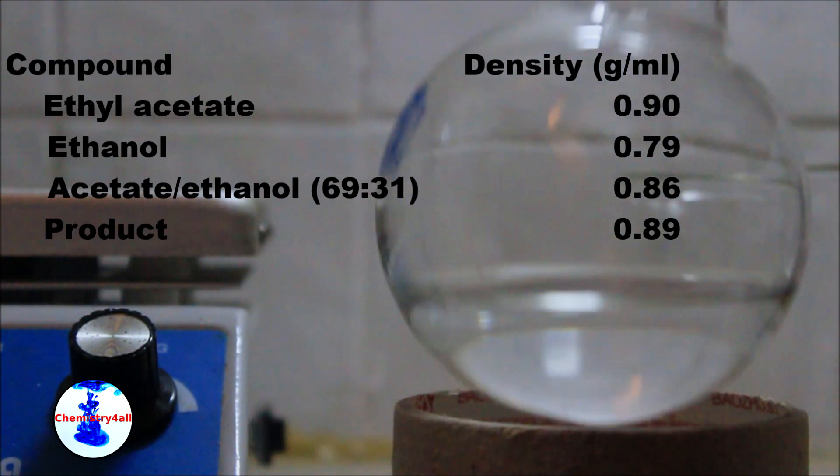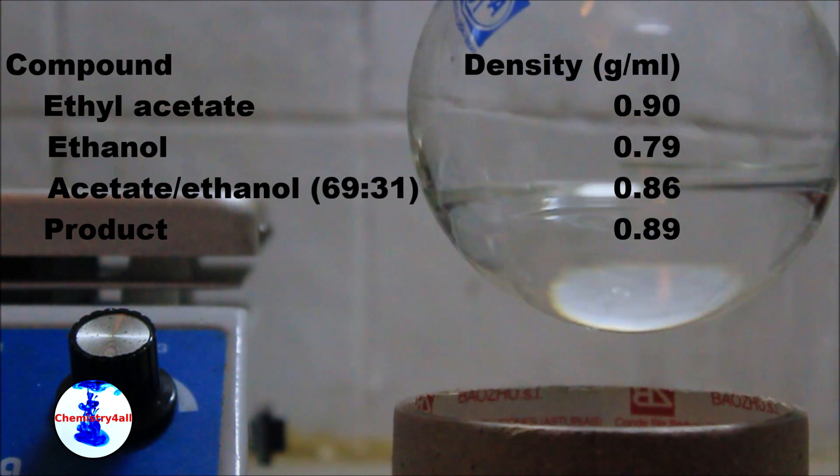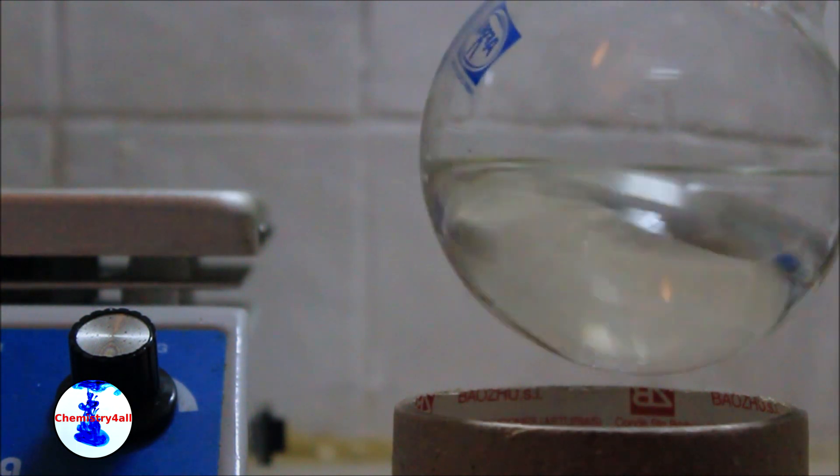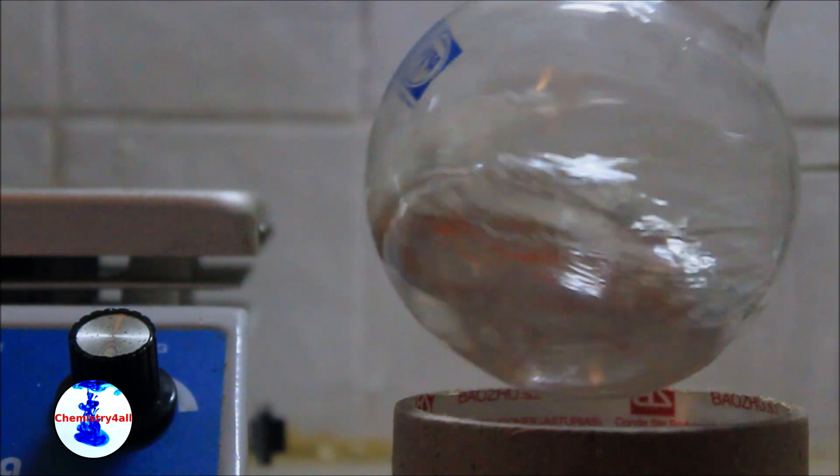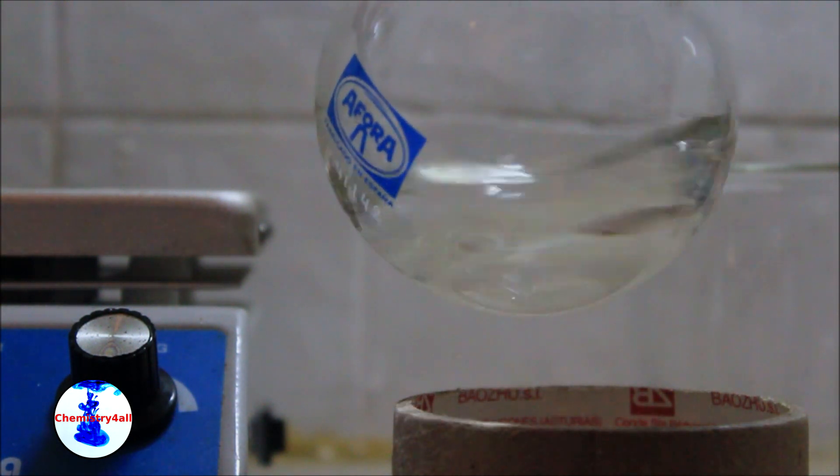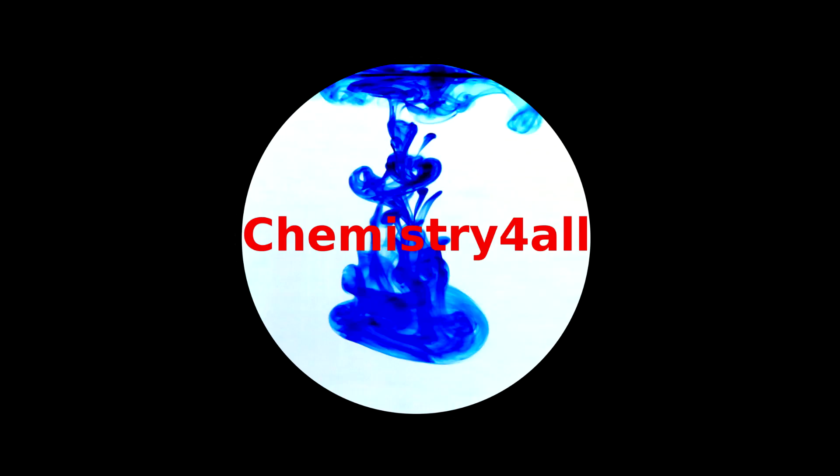Additionally, the density of our final product turned out to be almost coincident with that of pure ethyl acetate. Therefore, and assuming that we have obtained 100% pure ethyl acetate, we have obtained a final yield of 83%. Thanks for watching.